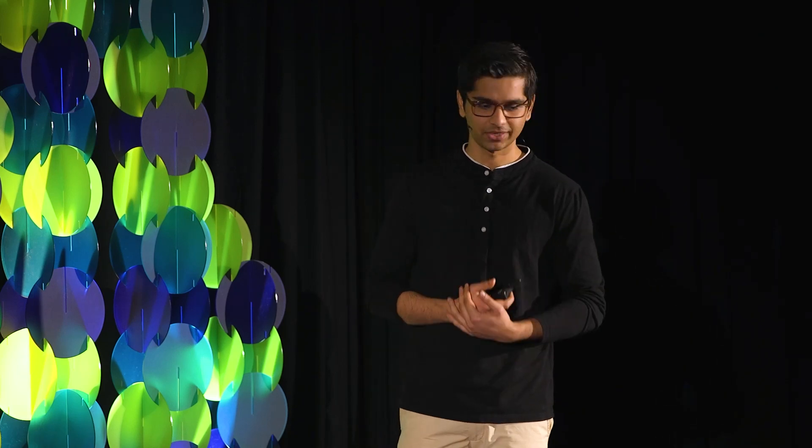So the question is, how do we incorporate self-organization into AI? And this is where I think we need to build two pillars on which self-organized AI will stand: zero trust and distributed algorithms. Let me tell you what I mean by that.